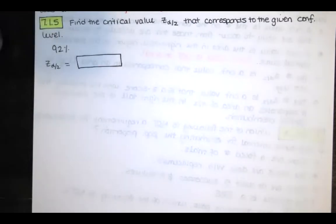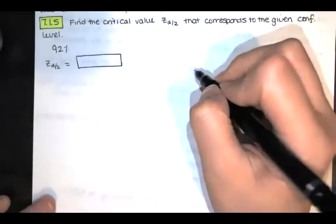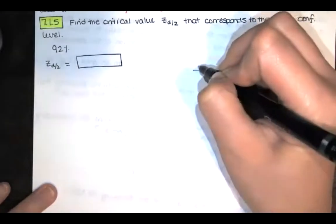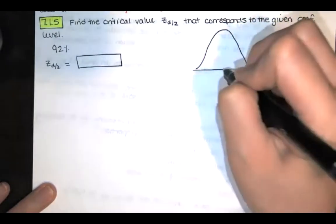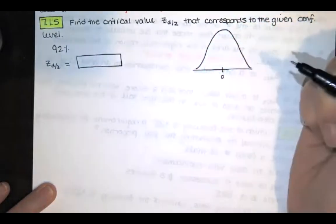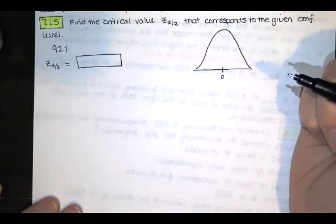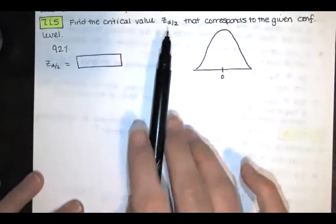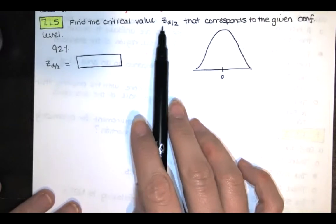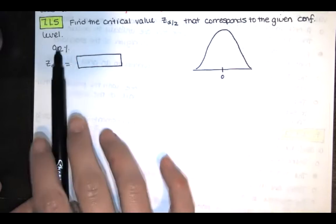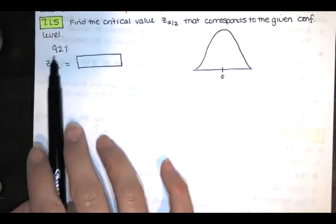The first thing I do anytime I'm trying to find a critical value is I graph a standard normal distribution. So I have this standard normal distribution with z equals 0 right in the middle. And what I'm trying to do here when I find this z sub alpha over 2 is I want to find the z score that will leave this 92% in the middle.